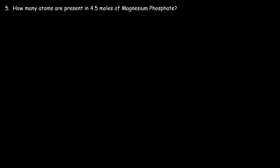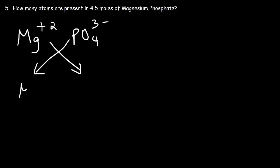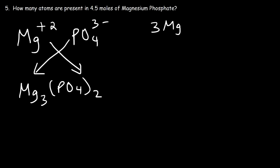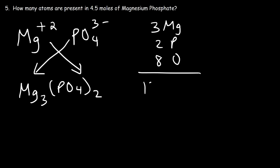Number 5: how many atoms are present in 4.5 moles of magnesium phosphate? We want the total number of atoms, so we need the correct chemical formula. Magnesium is in group 2A with a +2 charge; phosphate is PO₄³⁻. Exchanging and reversing the charges gives Mg₃(PO₄)₂. There are 3 magnesium atoms, 2 phosphorus atoms, and 4 × 2 = 8 oxygen atoms — a total of 13 atoms in one formula unit of magnesium phosphate.